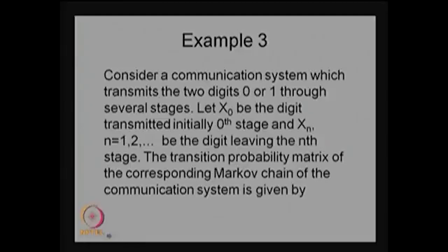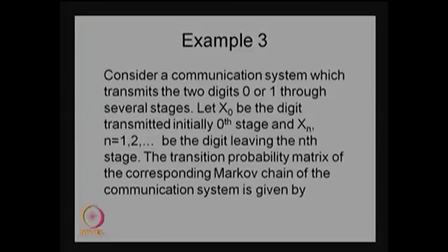This example discusses a communication system in which transmission takes place with digits 0 and 1 over several stages. We define the random variable x0 as the digit transmitted initially at the zeroth step. Either 0 or 1 can be transmitted at any nth step, making it a stochastic process because you never know which digit is transmitted at the nth stage.